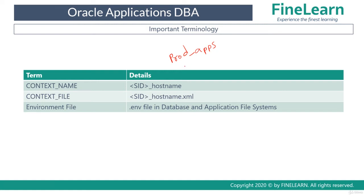For example, there is a file called the context file, which is a collection of several configuration settings in eBusiness Suite, and its name is also in the same format: SID underscore hostname, or context name, dot XML. It is very important that you remember the term context name — whenever you hear it, relate it to SID underscore hostname.